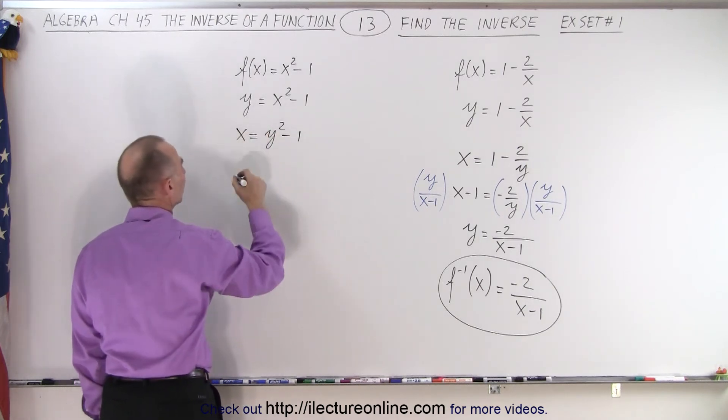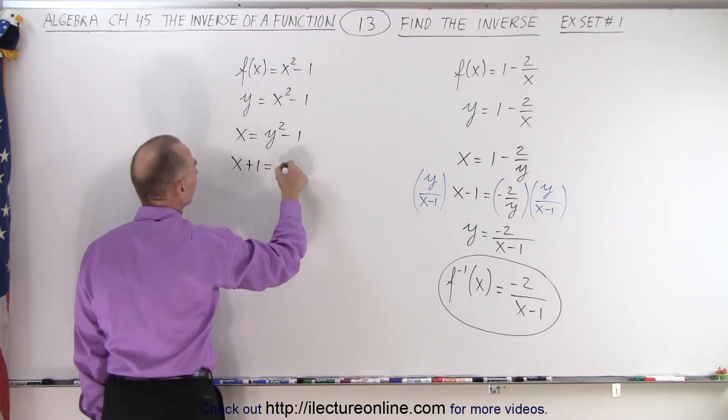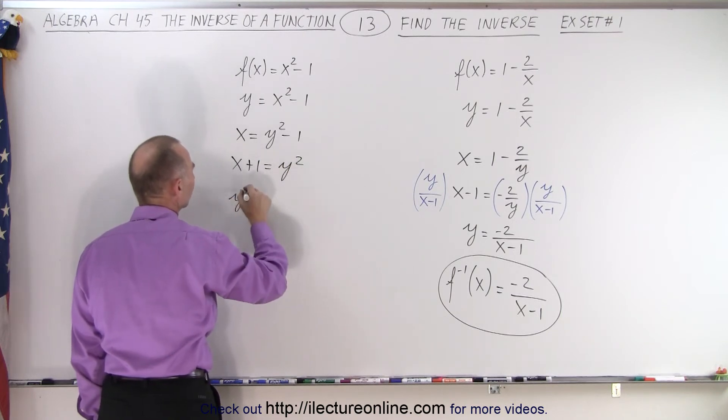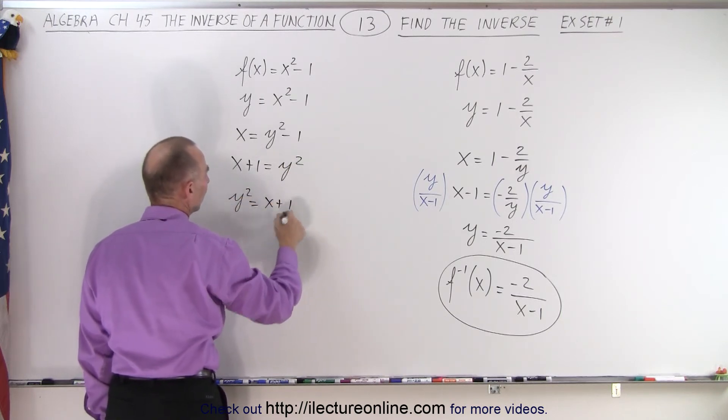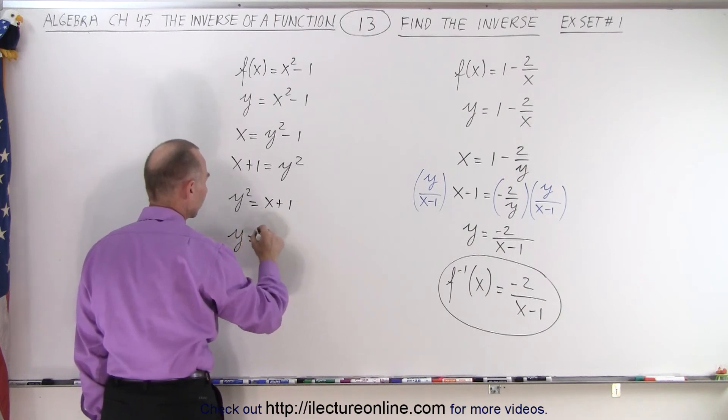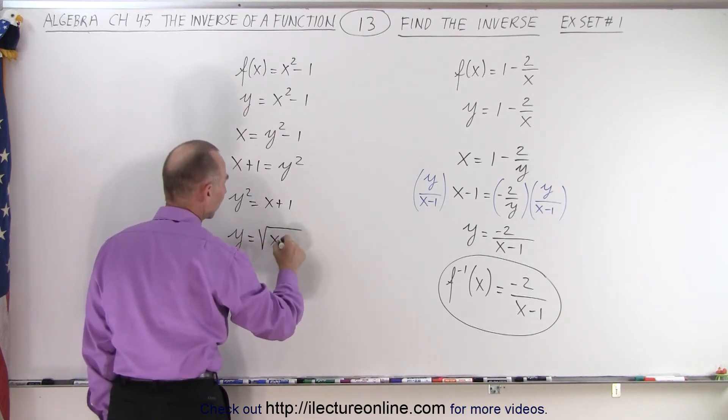Then we move the minus 1 across. We have x plus 1 equals y squared, or y squared equals x plus 1. And now we take the square root of both sides. So y is equal to the square root of x plus 1.